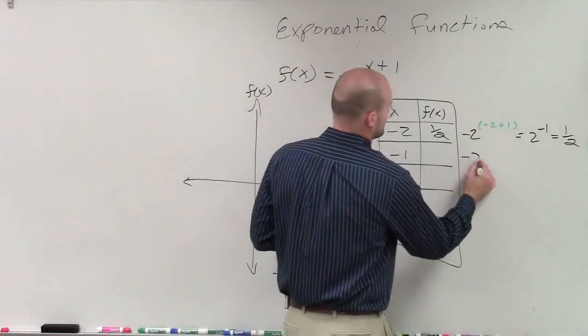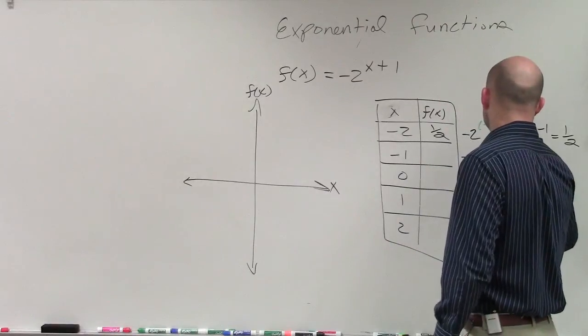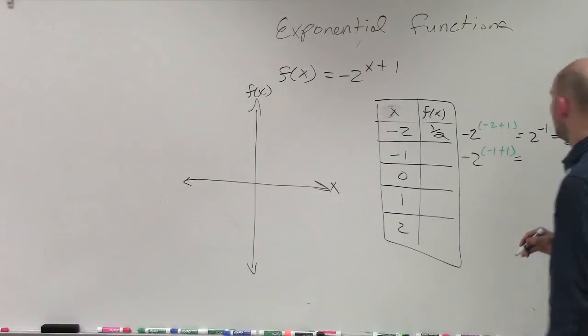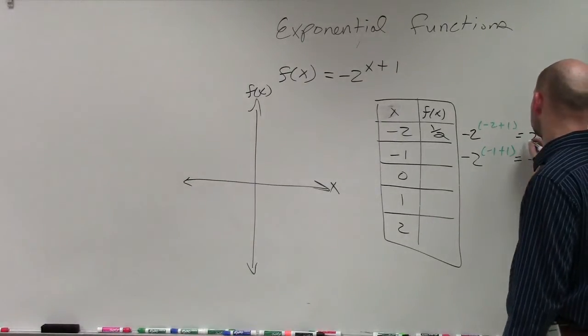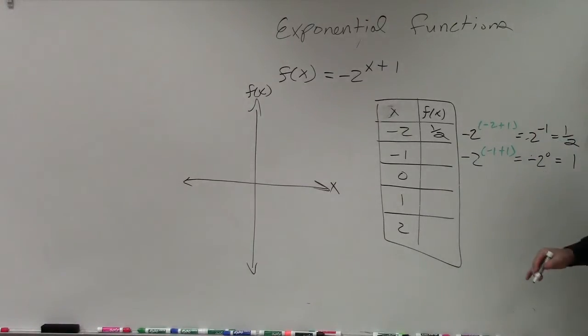Then we do negative 2 raised to the negative 1 plus 1. And that equals negative 1 plus 1 is 0. Oh, that's a negative 2, isn't it? Which equals 1.